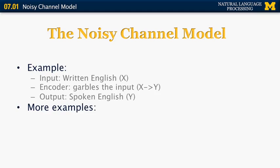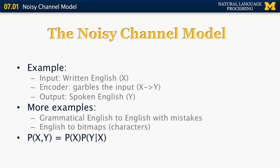Looking at more examples: we can convert grammatical English X to English with grammatical mistakes Y, or we can convert English X to bitmaps or characters. In the most general case, a noisy channel model is used to determine the connection between a joint probability of two sequences as the product of the first sequence times the probability of the second one given the first one.